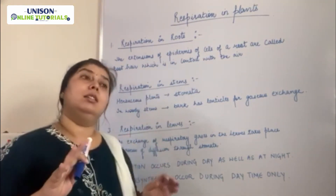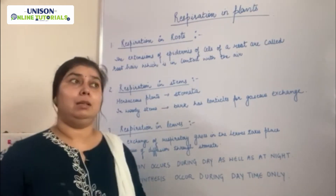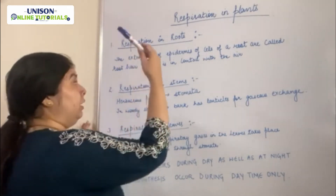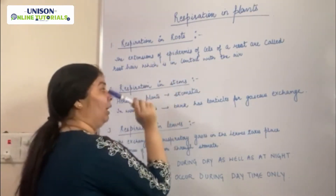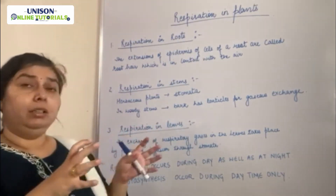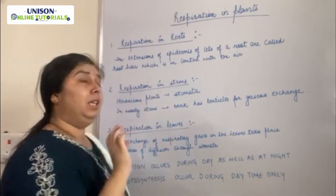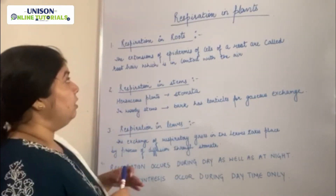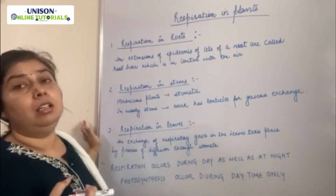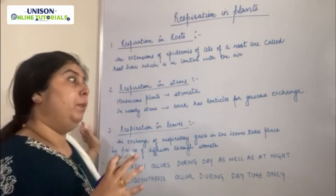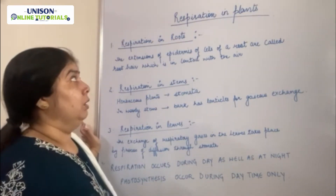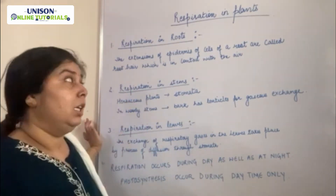Respiration in plants occurs individually, meaning each and every organ is involved in respiration. For example, respiration in roots occurs separately, in stems separately, and in leaves separately. In animals, respiration takes place as a single unit through a proper respiratory system, whereas in plants it takes place individually.